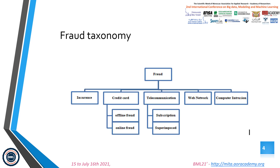Let's move to the fraud taxonomy. Almost any technology system involving money and services can be compromised by fraudulent acts. For example, credit card systems, telecommunication, etc. The figure below shows the most common areas of fraud including insurance, credit card, telecommunication, web network, and computer intrusion. This fraud has a negative impact in these areas, and for this reason, researchers have used different techniques to combat fraudulent activity.